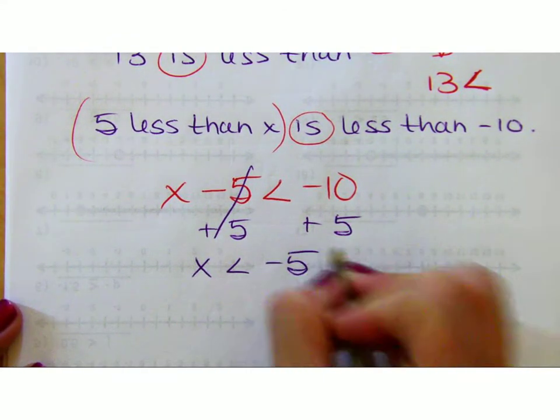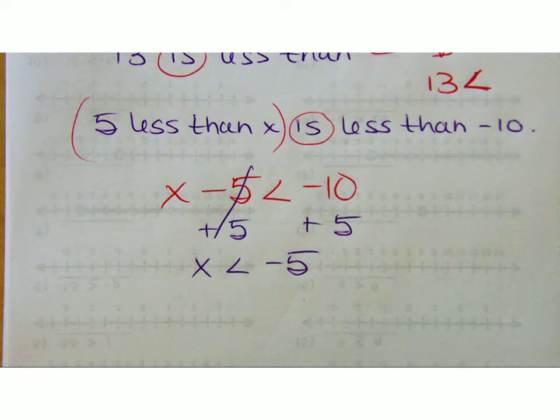So here, x needs to be less than negative 5. It can be negative 4, negative 3. I'm not going to graph them anymore just to save some time.